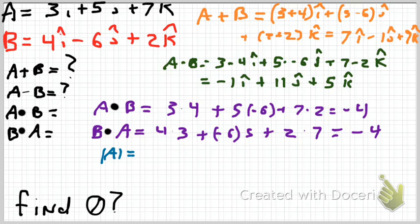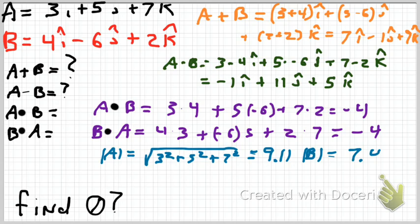Finally, to find the angle between them, the magnitude of a, is I take the x value squared, the y value squared, and the z value squared, take the square root of that. That is Pythagorean theorem in three dimensions. It works just like Pythagorean theorem in two dimensions. So, the magnitude of a is 9.11, and the magnitude of b is 7.48.